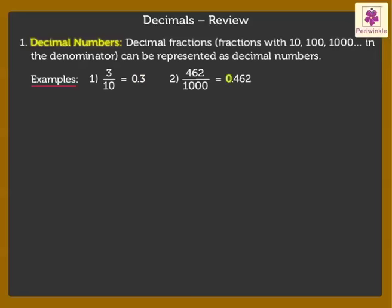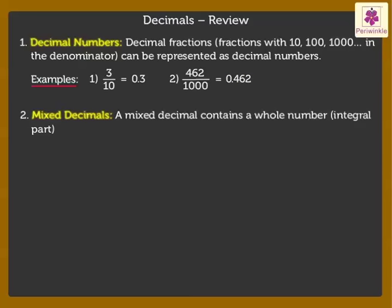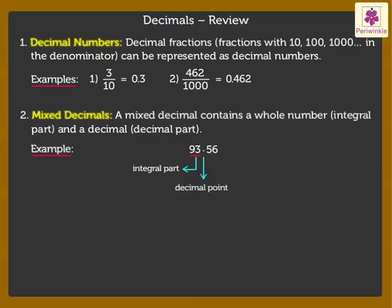Mixed decimals: A mixed decimal contains a whole number, that is the integral part, and a decimal, that is the decimal part. In this decimal, 93 is the integral part, the dot refers to the decimal point, and 56 is called as the decimal part.